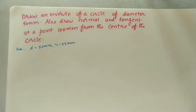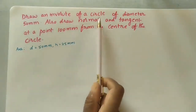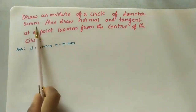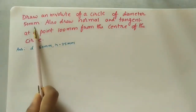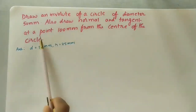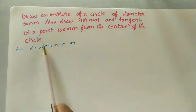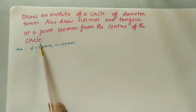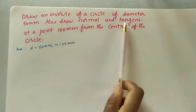Hi to all. Today we will discuss how to draw an involute of a circle. The given question is: draw an involute of a circle of diameter 50 mm. Also draw normal and tangent at a point 100 mm from the center of the circle. First we do the involute, after that we will do the normal and tangent to it.